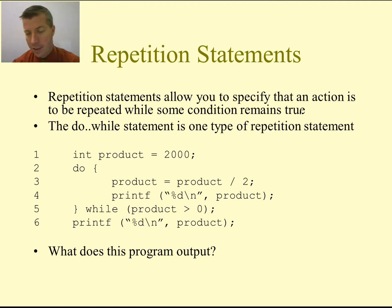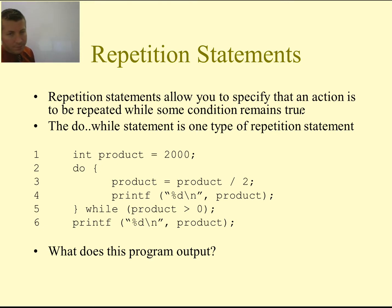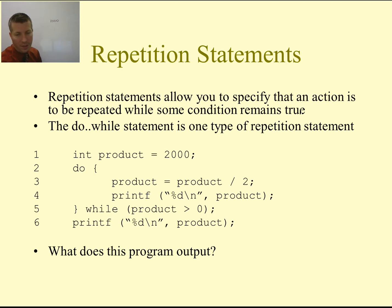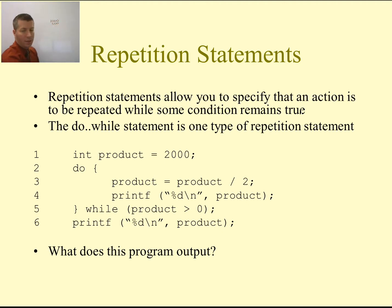Let's trace through this code and see the output. We start with product equal to 2000. On line 3, product equals product divided by 2, so 2000 divided by 2 makes it 1000, and we print 1000. We loop back because on line 5, is 1000 greater than 0? It is, so we loop back up. On line 3, product equals product divided by 2, which makes it 500, and then we print that value.